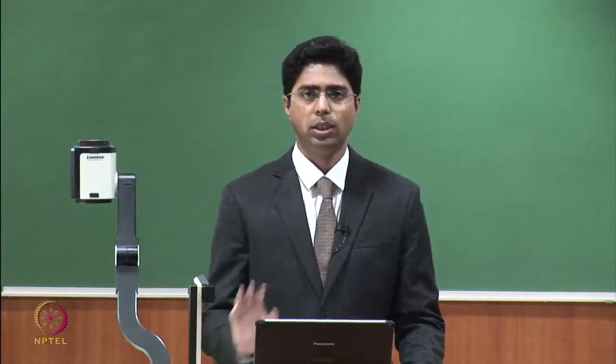Let's summarize this particular experiment — it is the most simple one. I expect anyone listening who has access to a machine to go and make different loop length fabrics and observe this variation. To summarize: when you increase the stitch cam setting, it results in bigger loop length, which results in lower wales per inch, lower courses per inch, lower stitch density, and lower GSM. So loop length significantly affects the fabric structural characteristics. In the next lecture, I am going to go for more complicated designs where I will change the stitches. Stay tuned. Thank you very much.